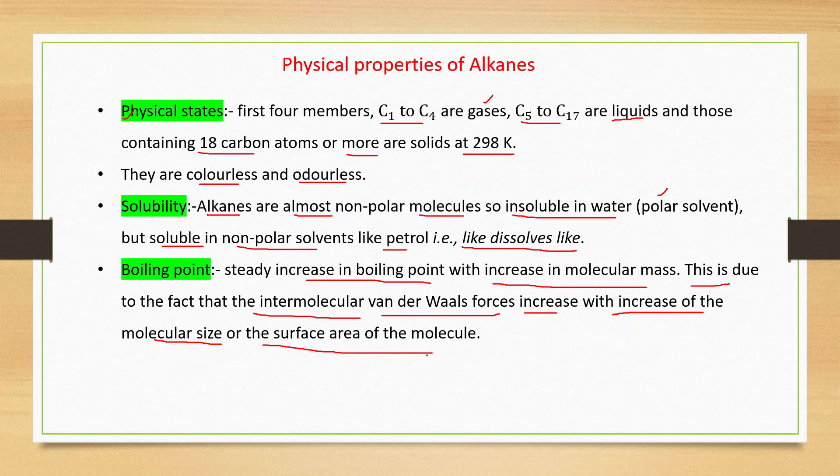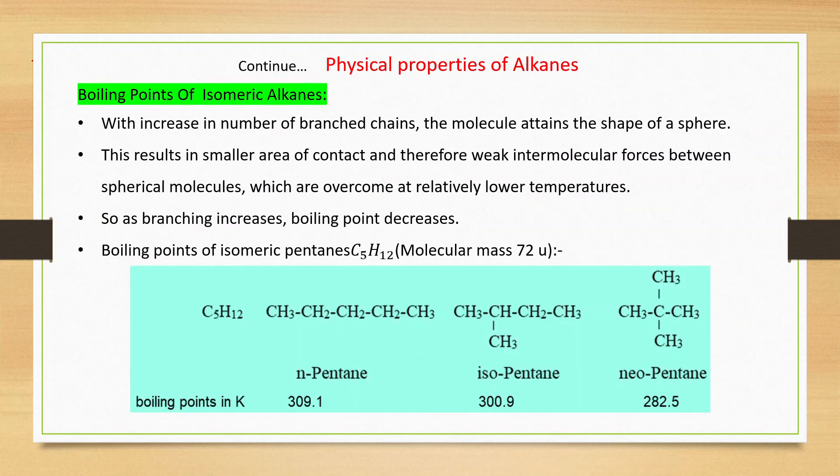So as the number of carbon atoms increases, boiling points also increase. For isomeric alkanes, which have the same number of carbon atoms and same molecular mass, how can we predict their boiling points? With increase in number of branched chains, the molecule attains the shape of a sphere.